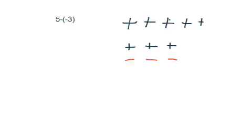I've gone ahead and put on the zero pairs. Notice there are three zero pairs here. That gives me three negative chips to deal with.